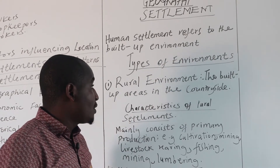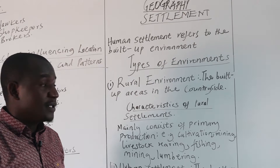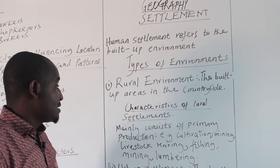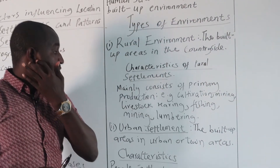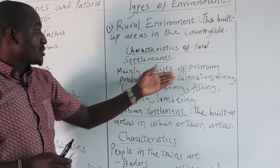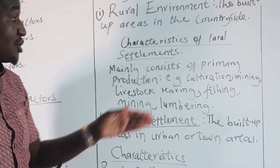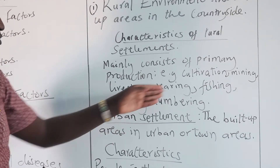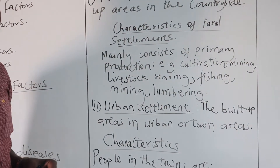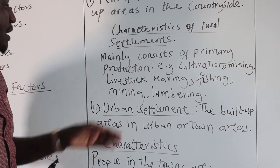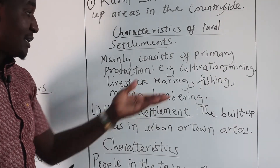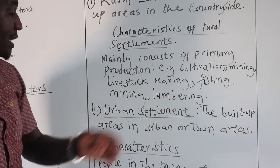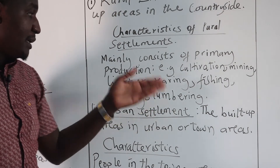That is where we have the rural environments, the built-up environment in the countryside. And the characteristics, as you can see, it mainly consists of primary production — we talk about cultivation and production of crops. We have mining activities taking place in the countryside, livestock rearing basically under pastoralism, fishing, and finally lumbering.